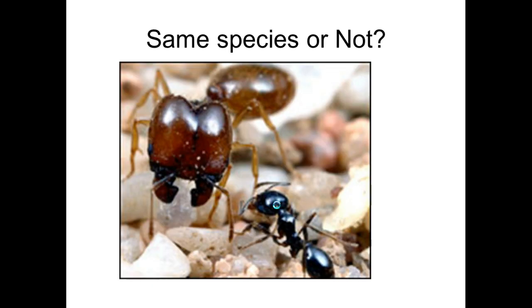Here, are these the same species or not? In fact they are the same species, but they're different sexes — one is a female and one is a male. The smaller one is a male and the large ant is a female.